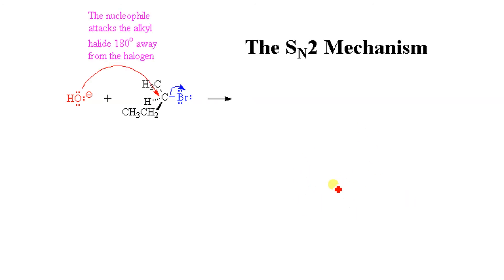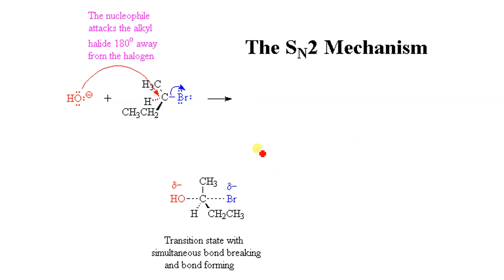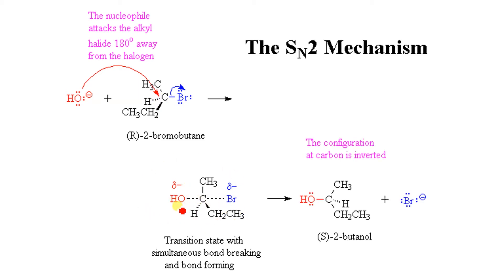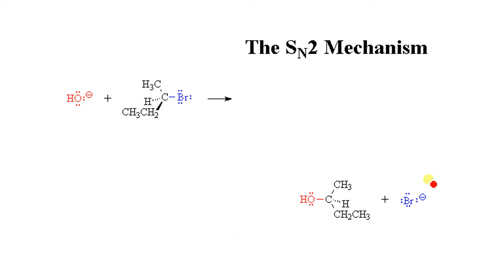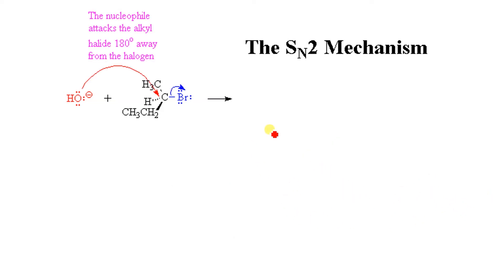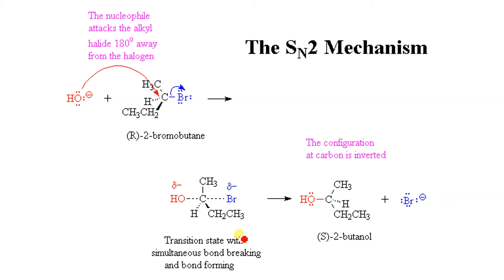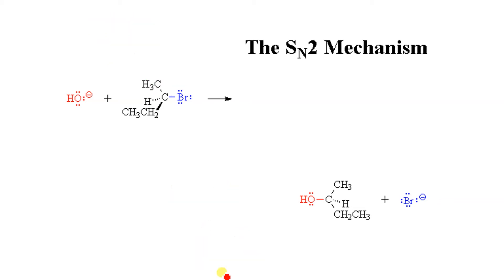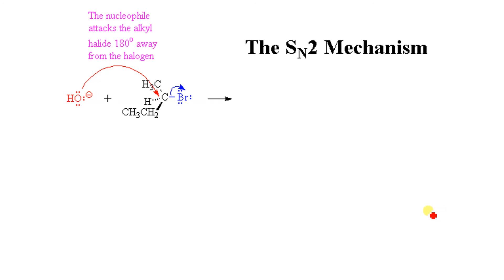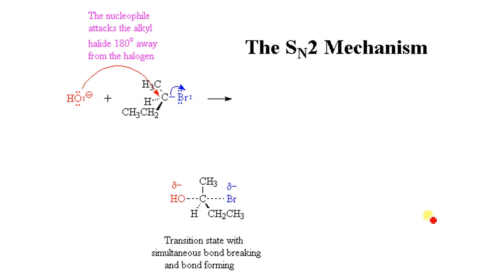In the SN2 mechanism: OH- attacks the alkyl halide from the back side. This leads to a transition state where both Br and OH are partially bonded. After that, Br- leaves and the product forms. The nucleophile attacks 180° away from the halogen. Bond breaking and bond formation occur simultaneously, and finally the product forms.